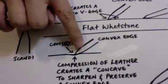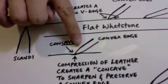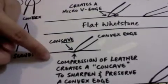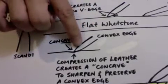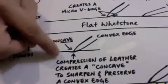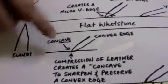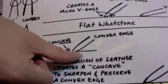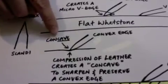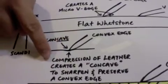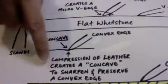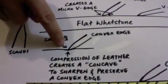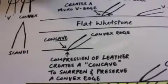When the convex edge, when you apply pressure on the sandpaper, which is on top of rubber or leather, this edge will compress the sandpaper, and the leather underneath it, and create a convex area, or concave area, sorry. This part will just concave in. And so, I written down, compression of leather creates concave, like this, to sharpen and preserve the convex edge.